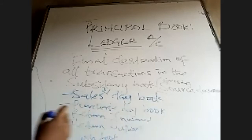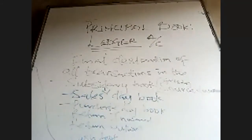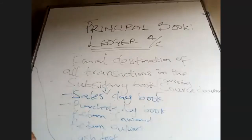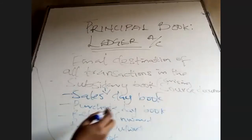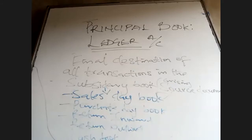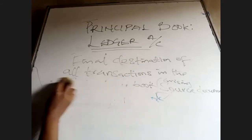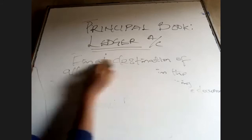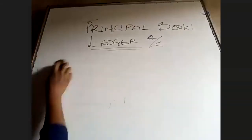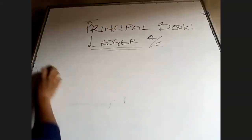The ledger account is the final destination for the sales day book, purchases day book, return inwards, return outwards, and your cash book - because they all arise from the source documents which I explained earlier. So let's go straight into our types of ledger.